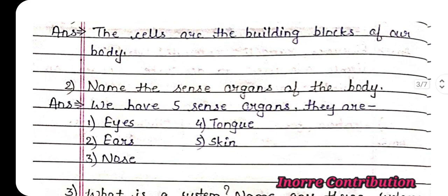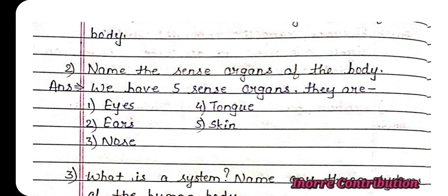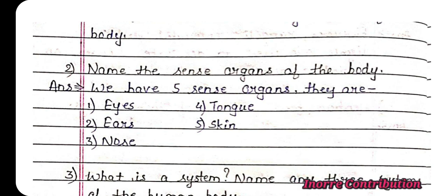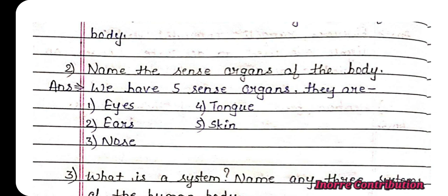Second one: Name the sense organs of the body. Answer: We have 5 sense organs. They are eyes, ears, nose, tongue, and skin.